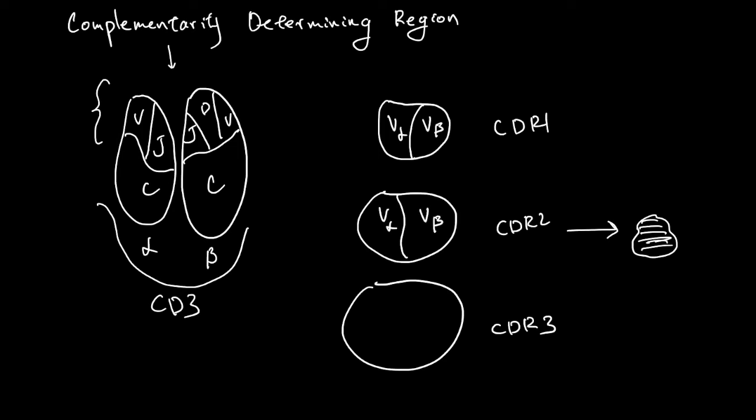And CDR3 has a region from V of alpha, and also a region from V of beta, but also other ones, J of alpha, J of beta. And the D here, and maybe some other stuff here.